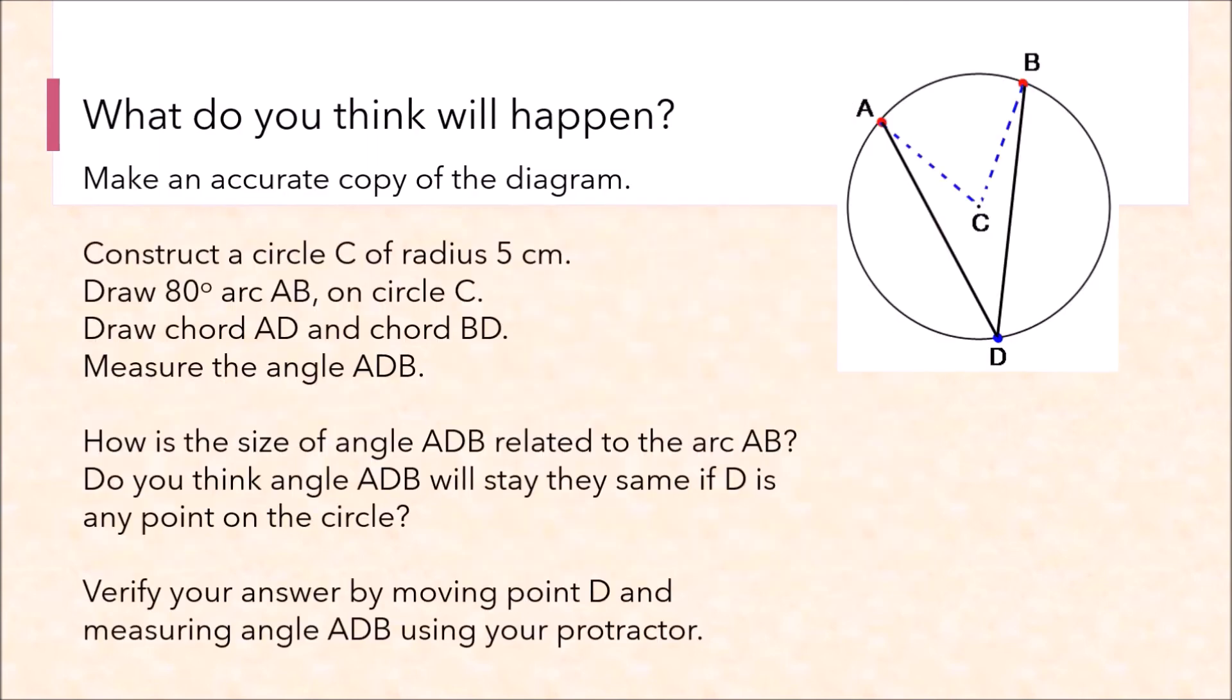Let's take a look at this exercise. What do you think will happen? Make an accurate copy of the diagram on an A4 sheet of paper. Follow all the instructions that are given in here. You will be looking at how the central angle C, the arc AB, and the inscribed angle D are related to each other. Pause this video and come back when you are done with the exercise.